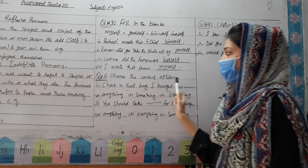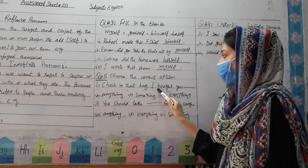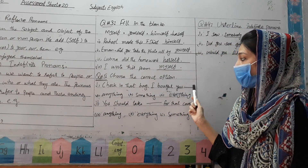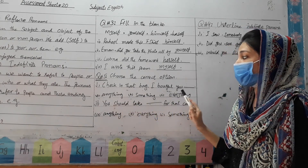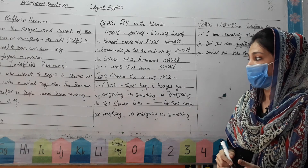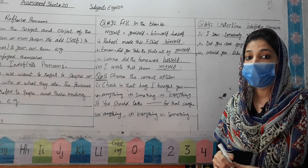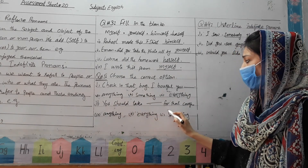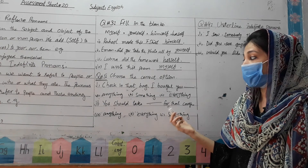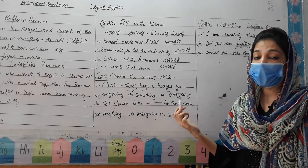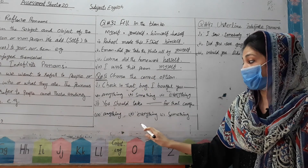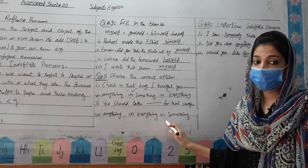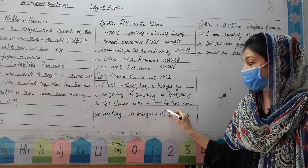Now come to question number 5: choose the correct option. First: Check in that bag, I bought you ___. Options are anything, something, everything. The answer is 'something' — I bought you something. Second: You should take ___ for that cough. 'Everything' is not correct; you cannot take everything. The right option is 'something'.